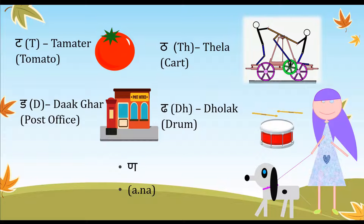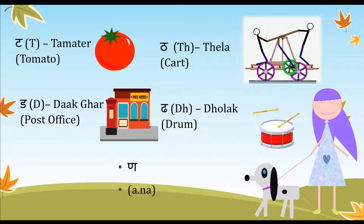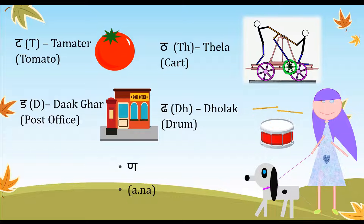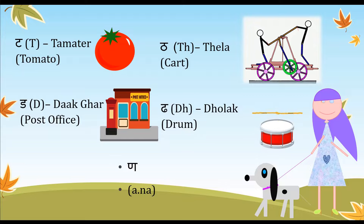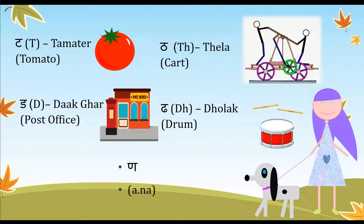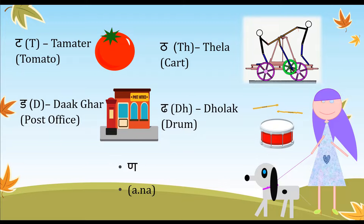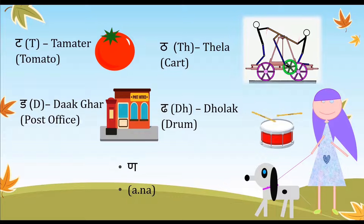Going back to 'da' and 'dha' — they can be a bit tricky to teach younger kids as they're often pronounced very similarly. 'Da' is just pronounced softly, and 'dha' has a bit of an aspirated sound — so just don't stress too much about the distinction there.